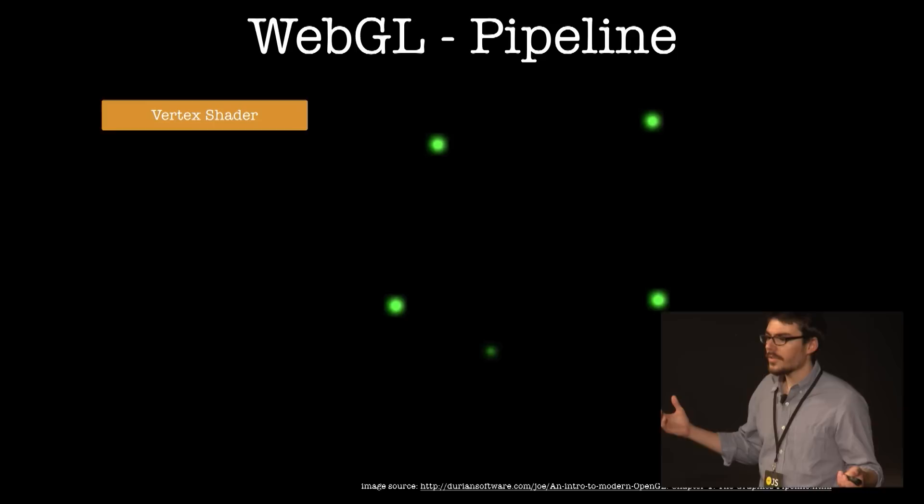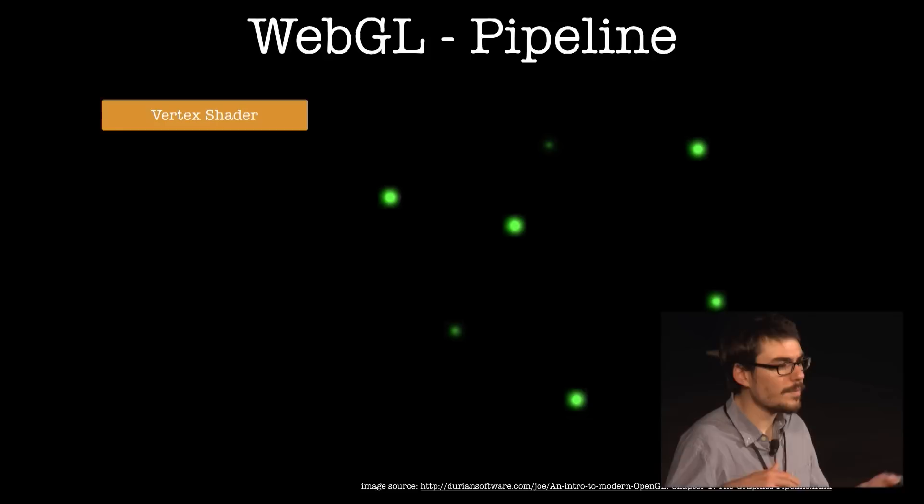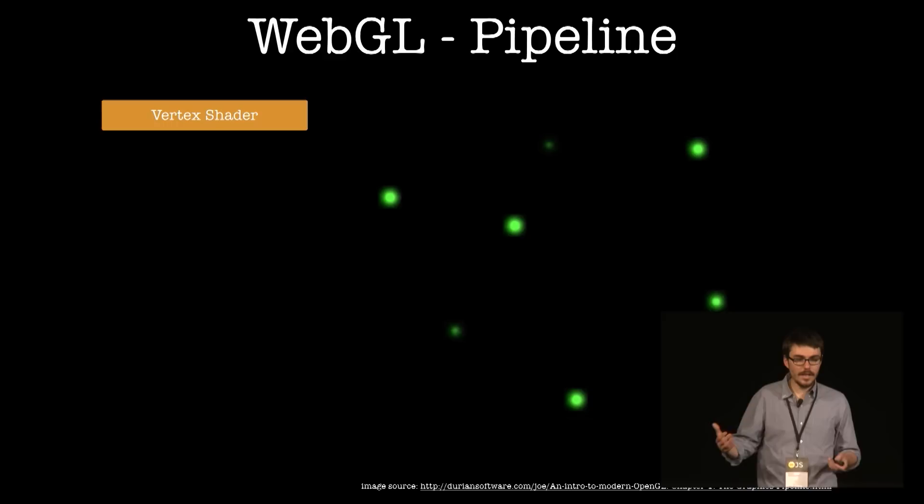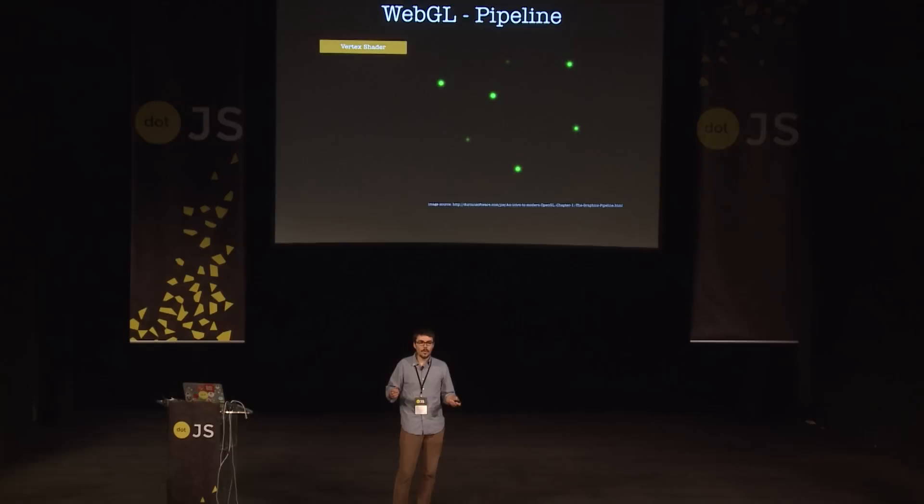Basically, you have an array of XYZ points — floats, points in 3D space — that you want to visualize. You put them into a buffer, a place in memory the GPU can access. Then they go through a vertex shader step. This vertex shader is highlighted in orange because you can actually code it. You code it in GLSL and you can translate, rotate, and scale those points — this runs really fast because it's running on the GPU.